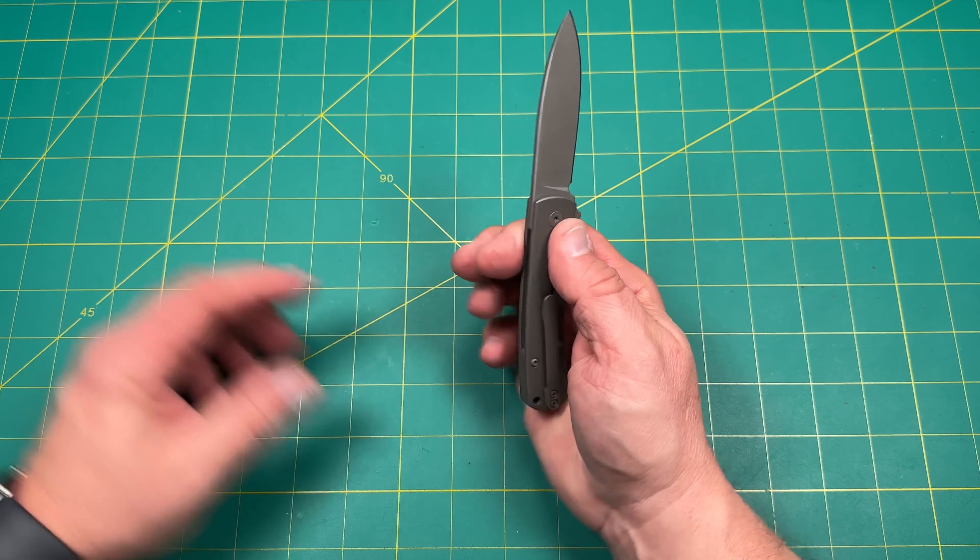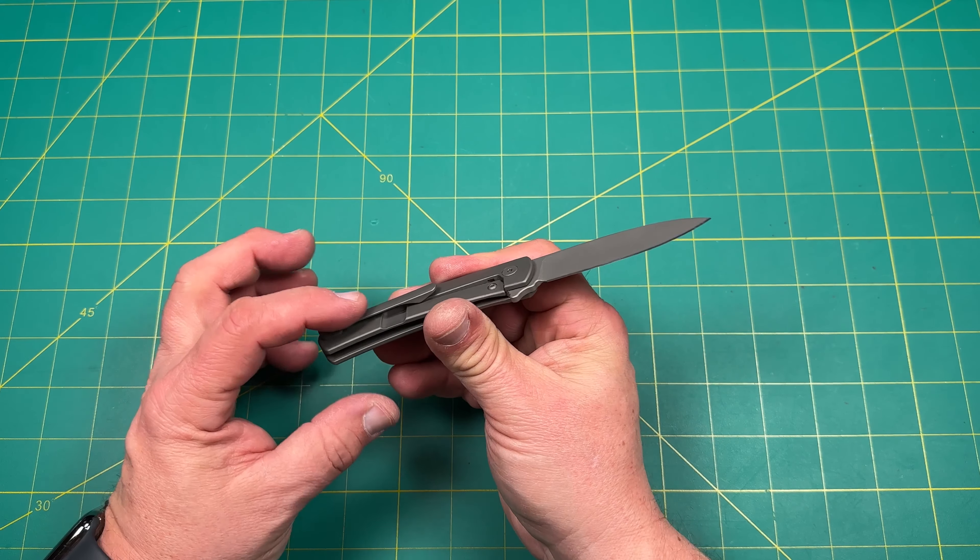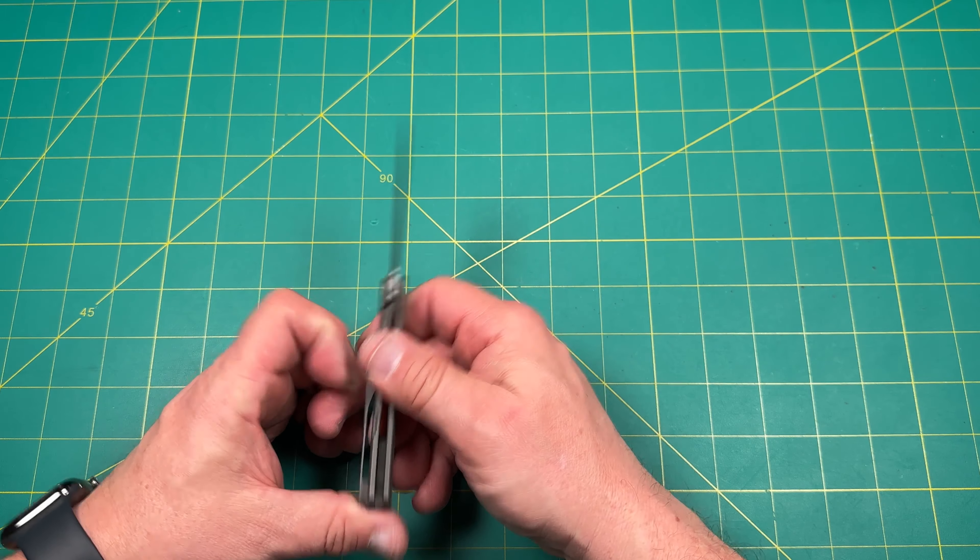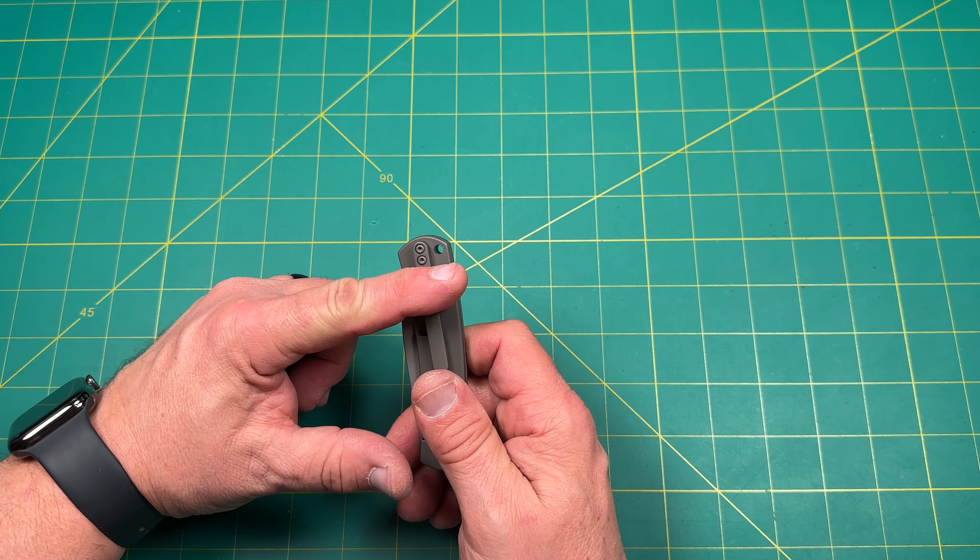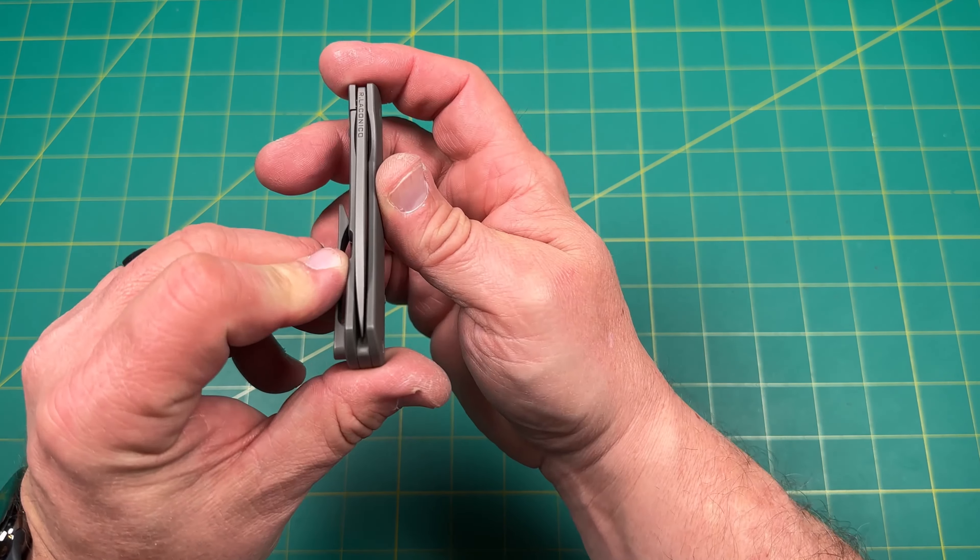So it does have a titanium backspacer, milled titanium deep pocket carry clip, which works really well in and out of the pocket, relatively pretty deep. So it goes about that deep. Doesn't stick out too much. Beautifully dead centered.